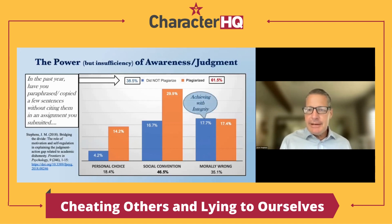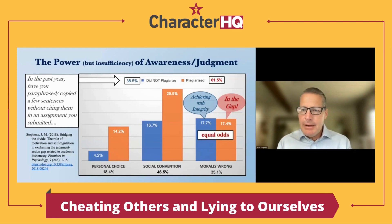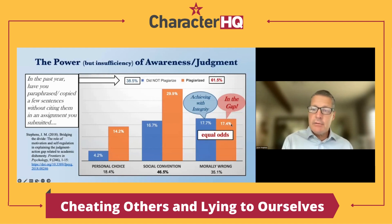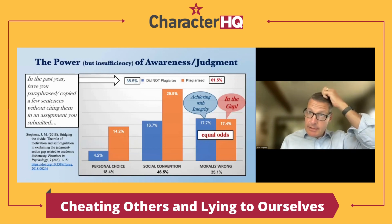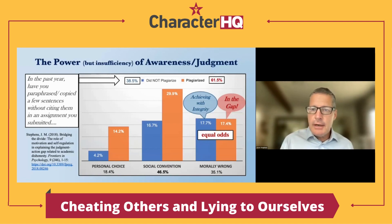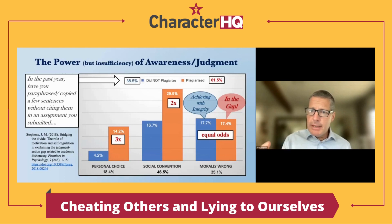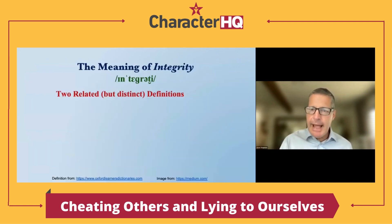Those who said it was morally wrong — about half of them achieved with integrity, acting in a manner consistent with their judgment and not plagiarizing. Whereas those in the gap said it was wrong and did it anyway. Equal odds might not sound good, but it's much better than if you just thought it was a social convention: you're two times as likely to be plagiarizing if you thought it was a social convention, and three times as likely if you considered it a personal choice. So there's some power in making moral judgments, but by themselves they're often not sufficient.